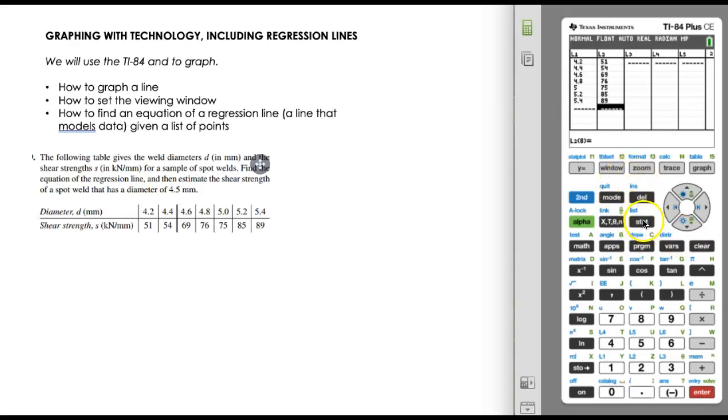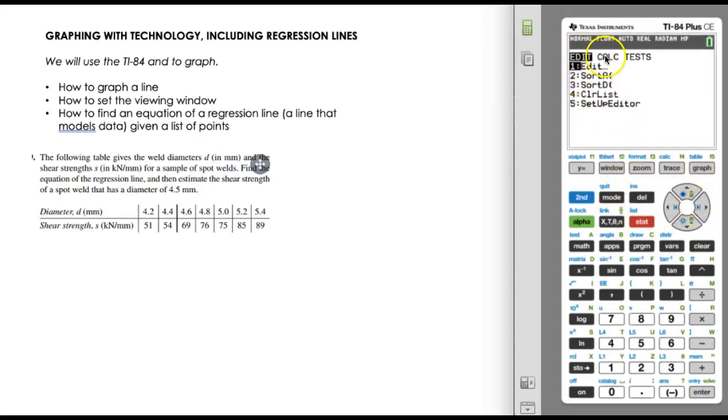So to do that, we go back to stat. So press in the stat key, and we're going to arrow over to calculate. These little things up here are like tabs, if you want to think of it like that. So this is a tab, and we've got these files here. So if I tab over to calculate, we've got all these things that we can do. Well, we're going to choose number four. And to choose number four, we can either arrow down to number four and hit enter, or we can just press the number four.